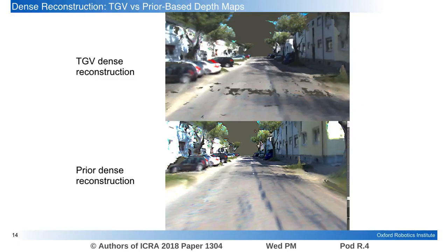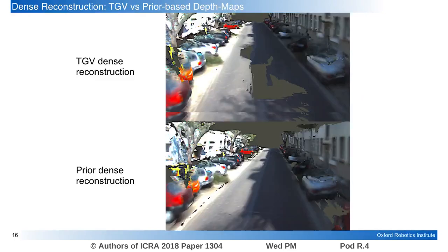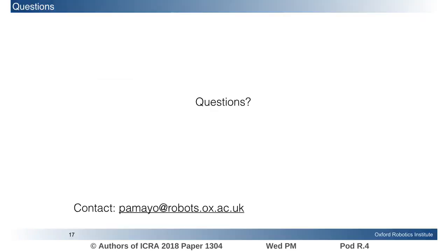When we zoom in on the reconstructions we can see that the road surface appears smoother, the walls more accurate, and we have more coverage with the prior depth maps. Thank you for your attention and I hope to see you in the poster section.